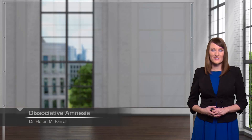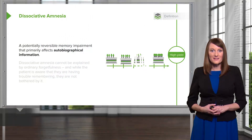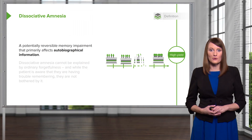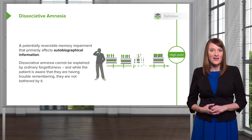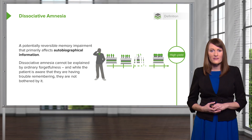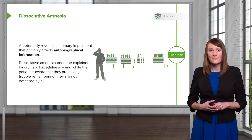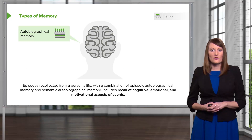Let's talk about dissociative amnesia — a potentially reversible memory impairment that primarily affects autobiographical information. The dissociative amnesia cannot be explained by ordinary forgetfulness. And while the patient is aware that they're having trouble remembering, they're actually oddly not that concerned by it. That's a key feature of the disorder.